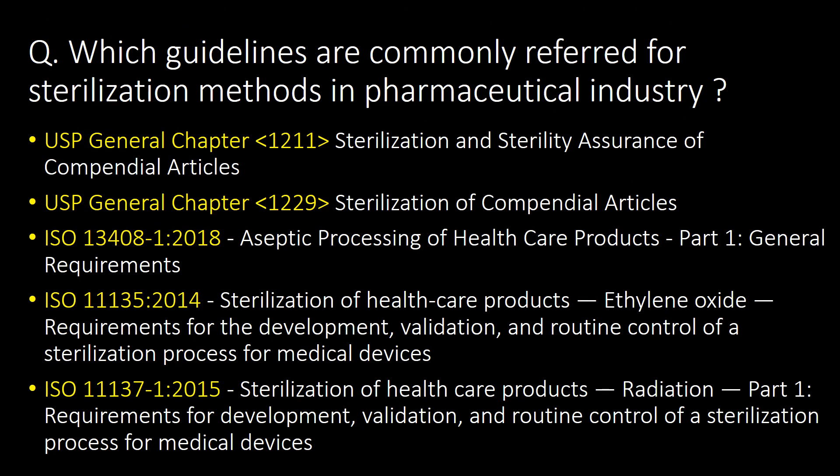Which guidelines are commonly referred to for sterilization methods in the pharmaceutical industry? The commonly referred guidelines are USP General Chapter 1221, USP General Chapter 1229, ISO 13408, ISO 11135, and ISO 11137.